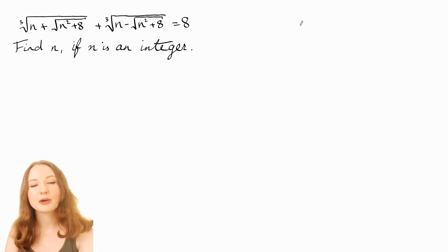Now we need to get rid of these cube roots, so the obvious thing to do would be to cube both sides of the equation, but that's going to give us all these cross terms, so we have to figure out what to do about that.